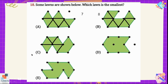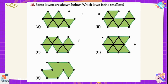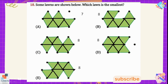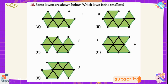In option C there are 8 triangles. Similarly, there are 8 triangles in option D. In option E, counting gives 8 triangles as well. As we can see, in option A there are 7 triangles, which is less than the rest of the options. So option A is the smallest lawn.